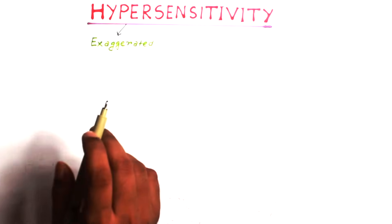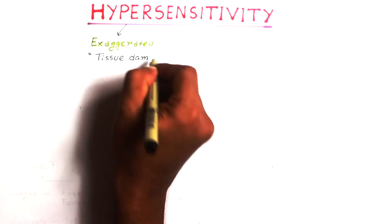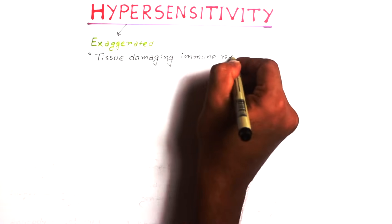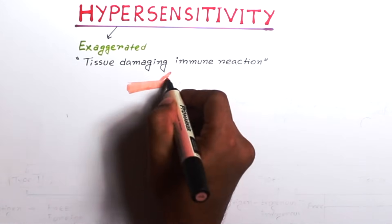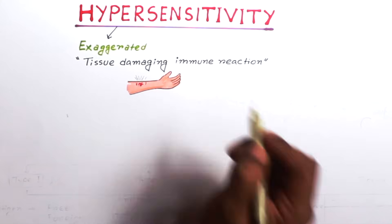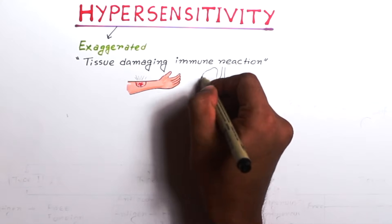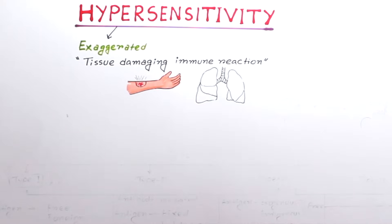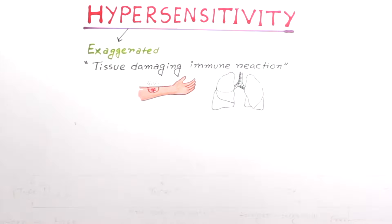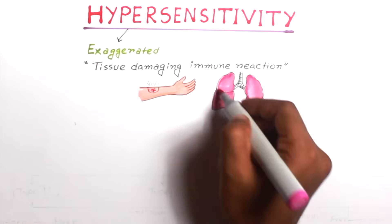The real concept is any tissue-damaging immune reaction in our body is called hypersensitivity reaction, ranging from annoying but trivial discomforts such as itching of the skin to potentially fatal diseases such as bronchial asthma or anaphylaxis. All are hypersensitivity reactions.